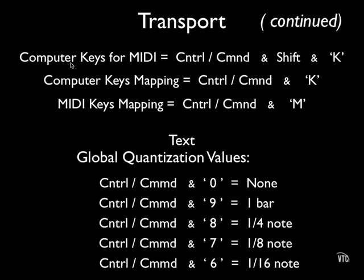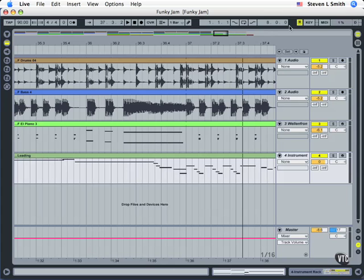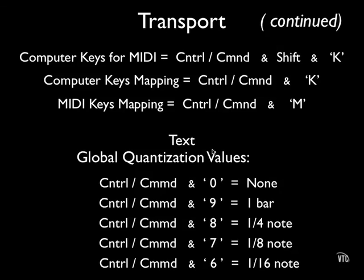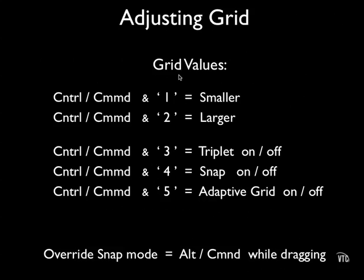Going back to the presentation, we also have computer key shortcuts for mapping computer keys to MIDI and for MIDI key mapping — those are from the icons in that region. We also have global quantize values: use Control+Command or the number keys 0, 9, 8, 7, and 6 to activate different resolutions. For grid editing, Command+1 makes it smaller, Command+2 makes it larger, Command+3 turns the triplet grid on and off, Command+4 toggles snap mode, and adaptive grid — which changes as you zoom — can also be turned on and off.